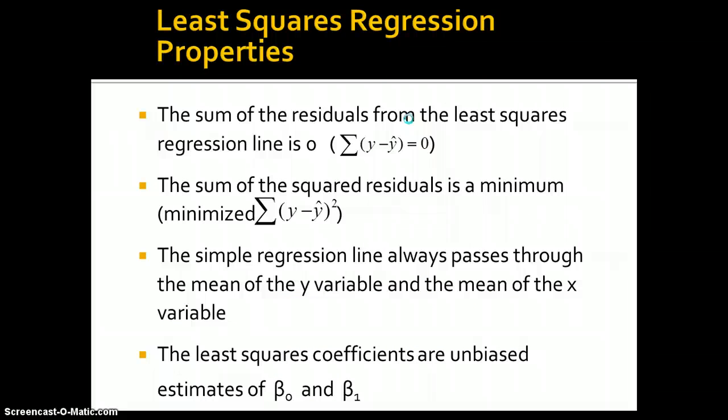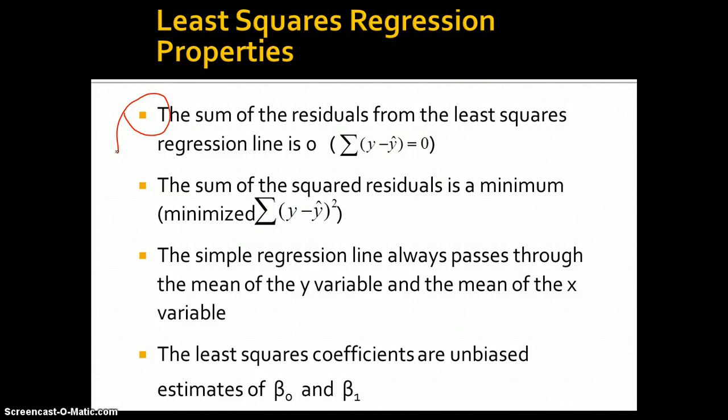Now, the random coefficient — the unexplained variance, the error — we have to talk about that a little bit because that's how we get our estimation of how much our linear equation is really explaining about the dependent variable. We can start by saying that the sum of the residuals from the least squares regression line is 0.